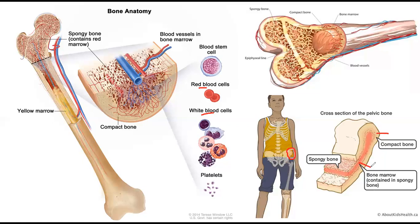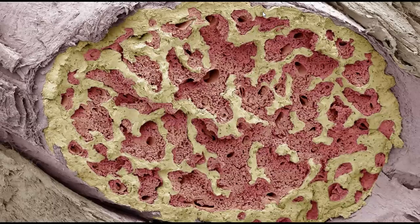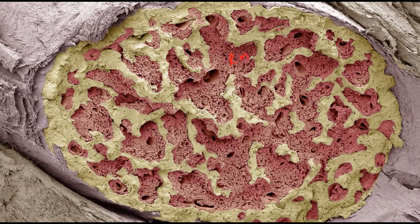The bone marrow is the main site of cellular differentiation of immune cells — white blood cells and red blood cells. A scanning electron microscope image of a finger shows the red bone marrow and yellow bone marrow in their actual structure, as opposed to the animated diagrams used earlier.